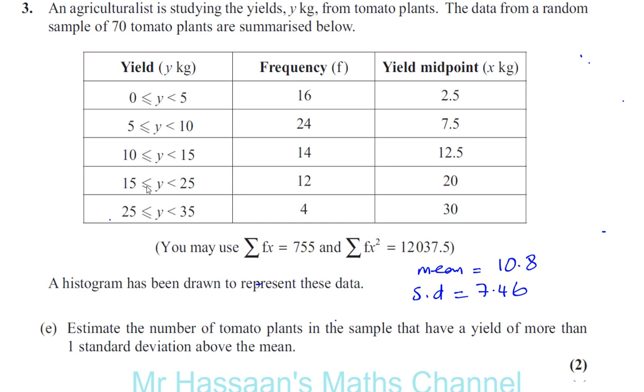We can see that in the 25 to 35 kilograms category, there are four plants, definitely more than 18.26. Now we've got to work out how many of the plants in this particular category are more than 18.26.